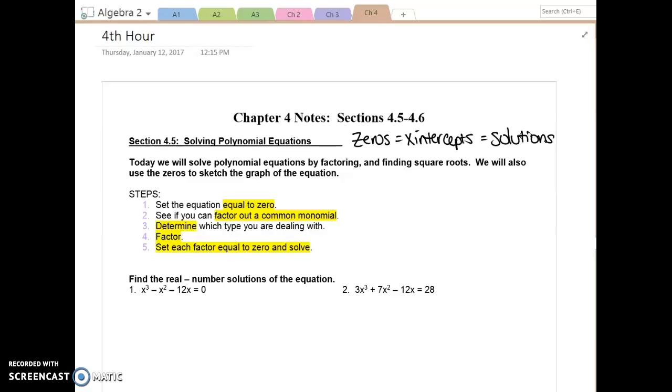Here's our steps: Set the equation equal to zero. See if you can factor out a common monomial, we've referred to that as factoring out the GCF. Then look at which type of factoring problem you're dealing with, factor it, and then set each factor equal to zero and solve.